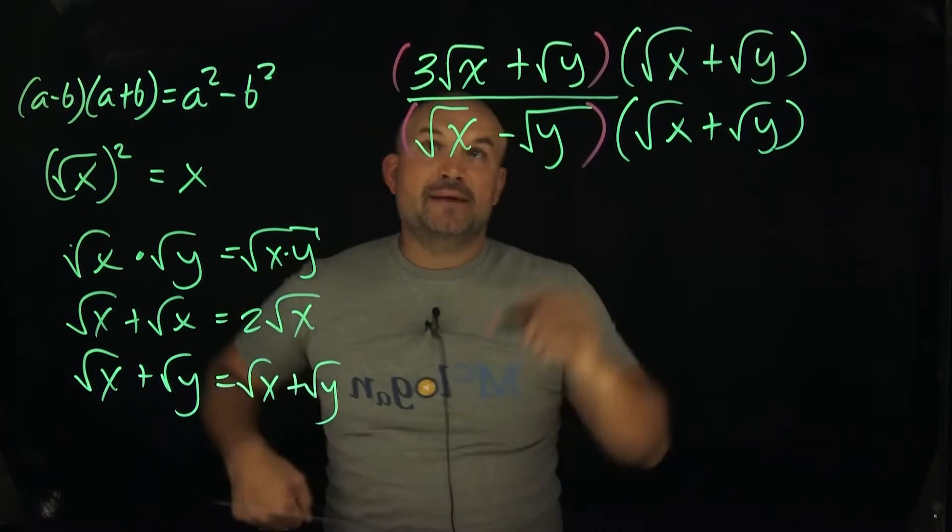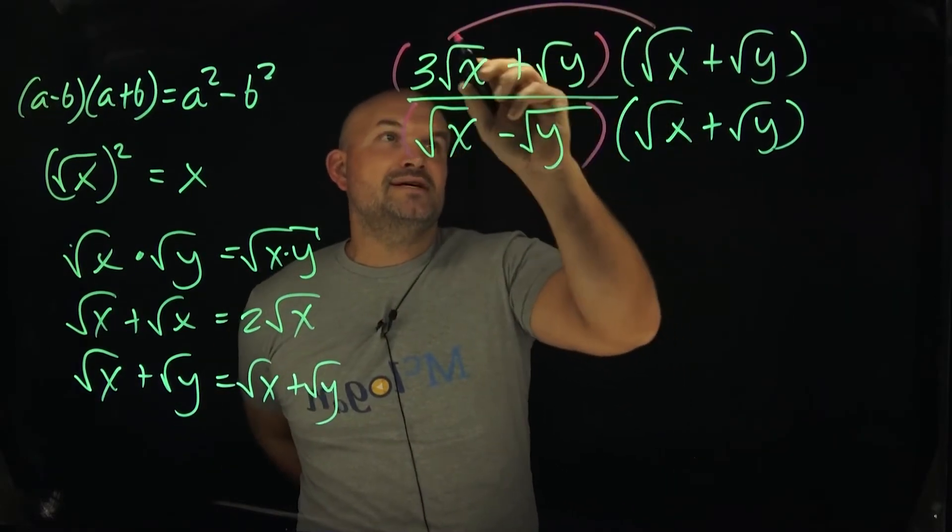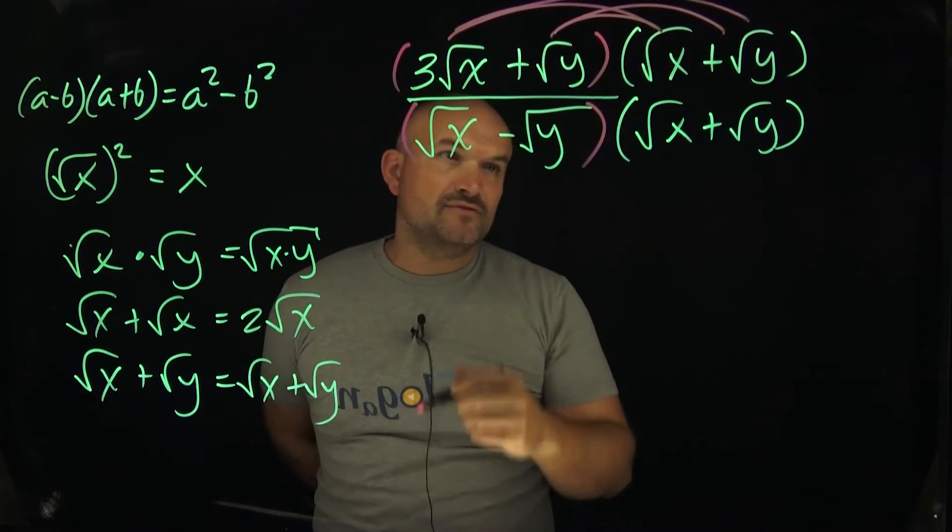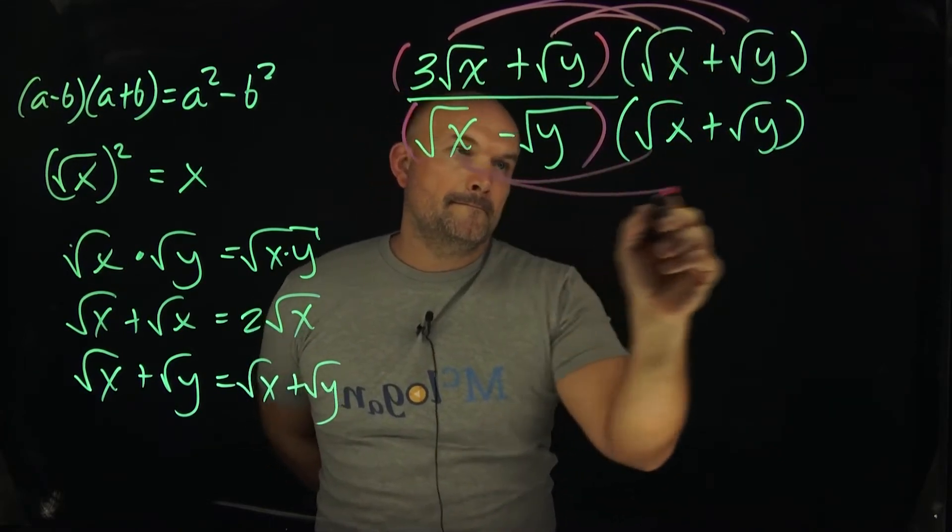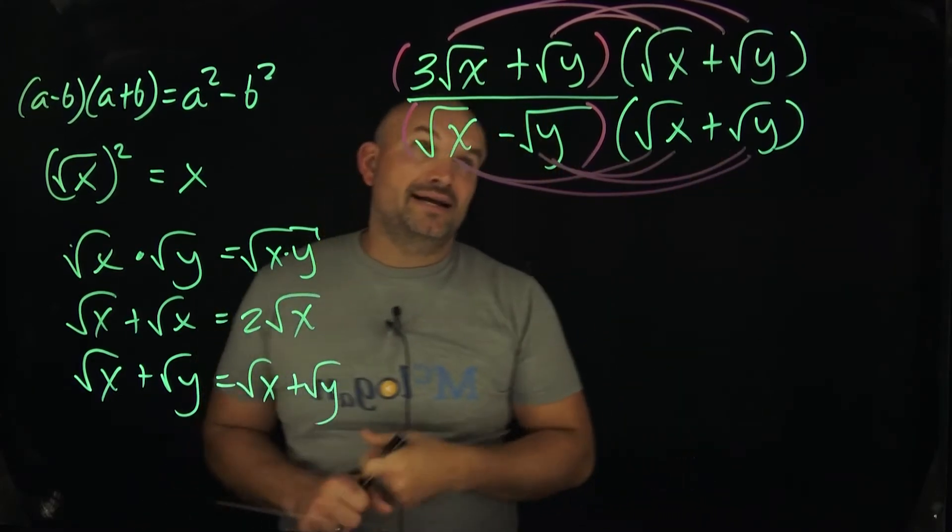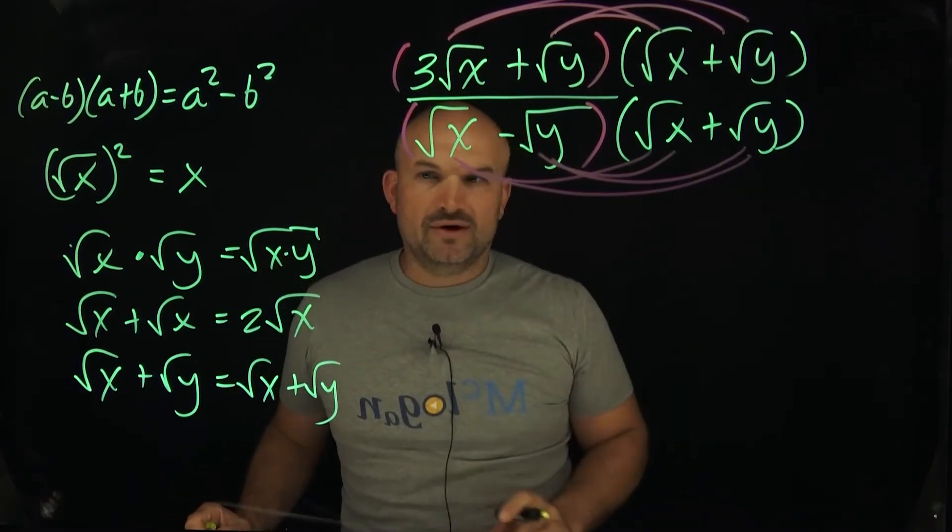Now what I need to do is apply distributive property. So we're going to multiply this times this, that times that, this times this, that times that. And we're going to do the same thing for the denominator. Okay, so this is a lot going on. I get it. Let's go ahead and kind of do these one by one. And then we'll go ahead and simplify it.